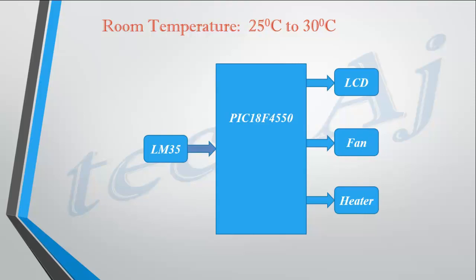Our system first reads the room temperature using the LM35. If the temperature is above 30 degrees Celsius, it will start the fan or AC to bring the room temperature back down to between 25 and 30 degrees Celsius.